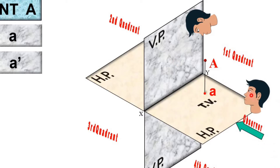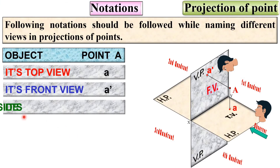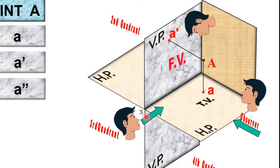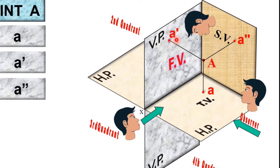If I want to see the front view, it must be projected on the vertical plane — it will be like this and is denoted by a-dash, and this is called the front view. Next, the side view is denoted by a double-dash. If the observer is in the side position then the view is known as the side view; the observer can be on the left side or the right side. The projection must be perpendicular to the observer's position and the projected view on that plane is denoted by a double-dash. So keep in mind: top view is denoted by 'a', front view by a-dash, and side view by a double-dash.